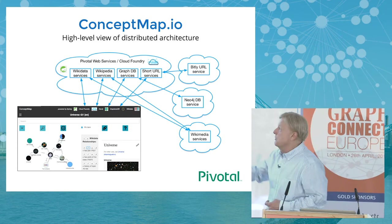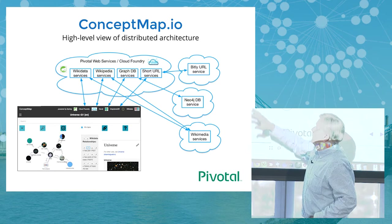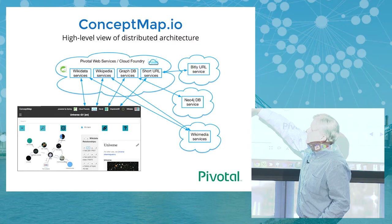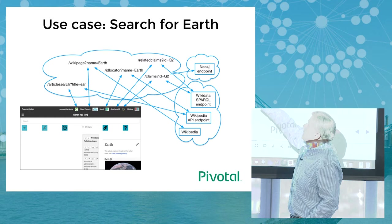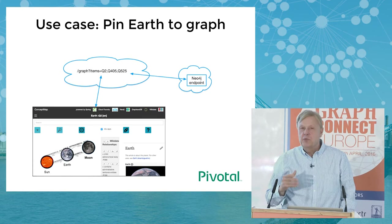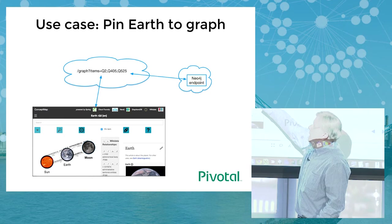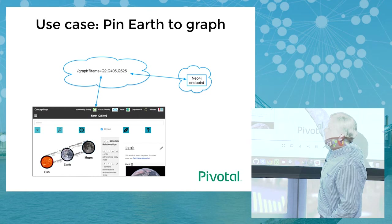The slides are online so I won't go through all the details, but we have different endpoints that are the microservices themselves. For example, if I search for 'earth', each keystroke triggers an article search; hitting enter looks up the Wikipedia API endpoint to find the Wikidata Q item. When I pin items to the graph, we use a graph endpoint, passing the Q items to the Neo4j endpoint, and then render the results.